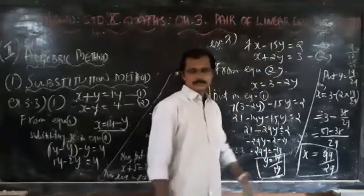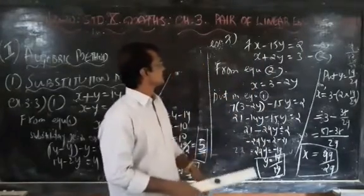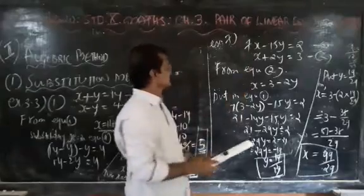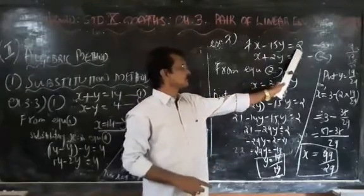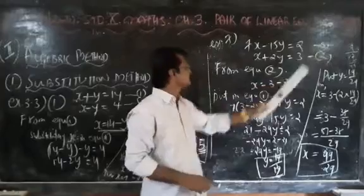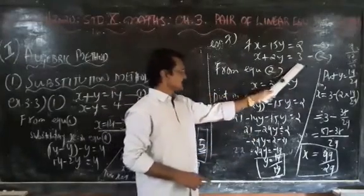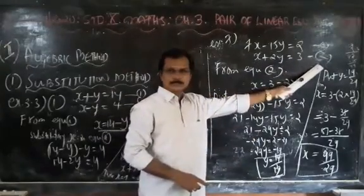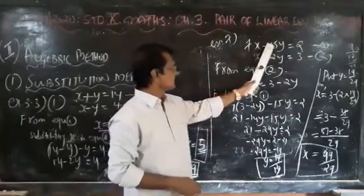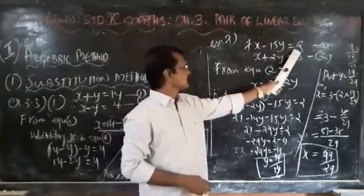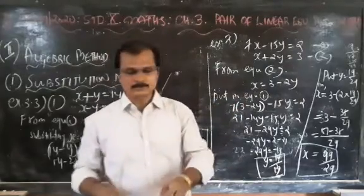Now we take another example — Example 7, page number 50. Here we have two equations: 7x minus 15y equal to 2, that is equation number 1, and x plus 2y equal to 3, that is equation number 2.